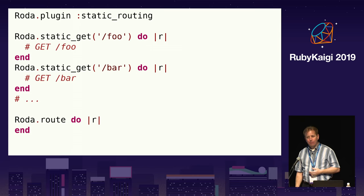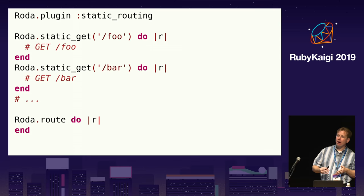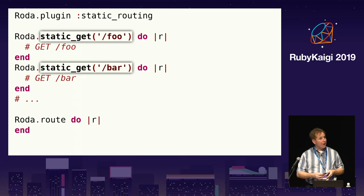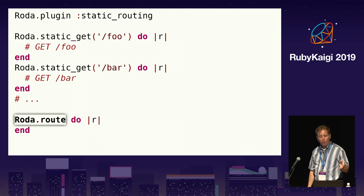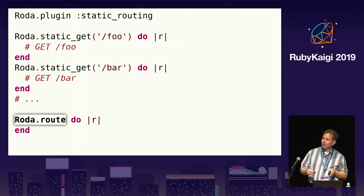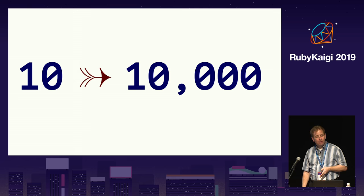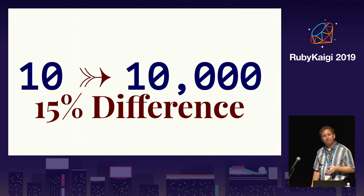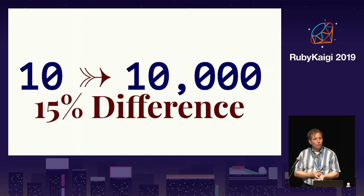Unfortunately with the static routing plugin, you lose the main advantage of Roda, which is the ability to operate on a request at any point during routing. You need to provide the full path of the request to match against when specifying the route. Roda puts all these static routes in a hash, and before the normal routing tree is called, it checks if the path of the request is in the hash of static route paths and dispatches to the appropriate route block. When using the static routing plugin, the difference in performance and routing speed between 10 routes and 10,000 routes is about 15%. The TechEmpower benchmarks for Roda use the static routing plugin to get maximum performance even though they only have six routes.